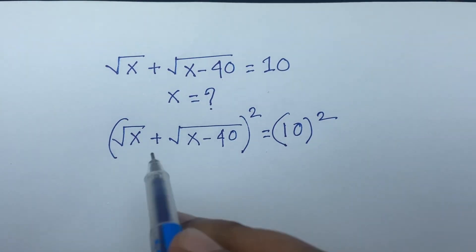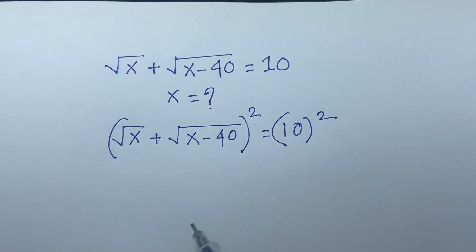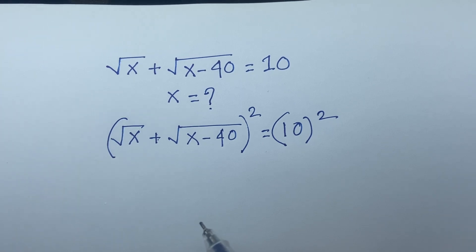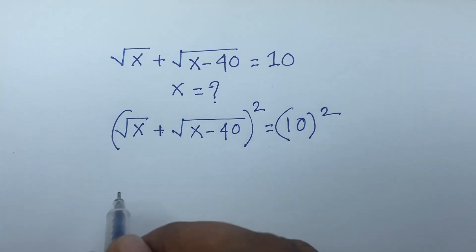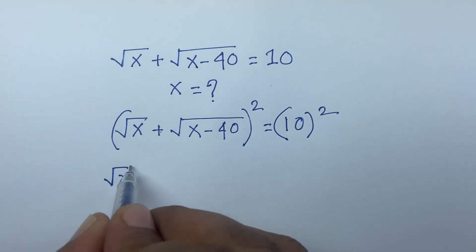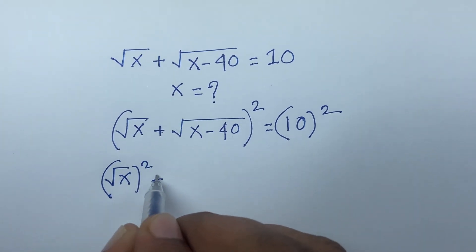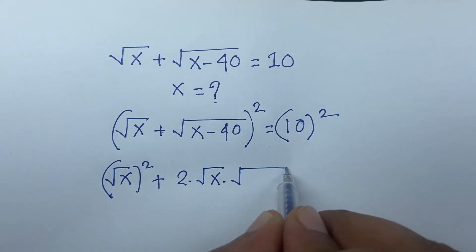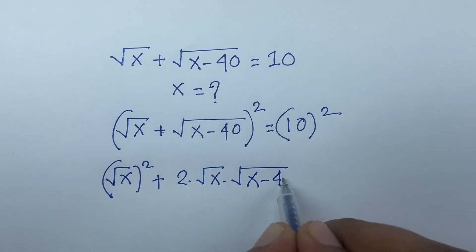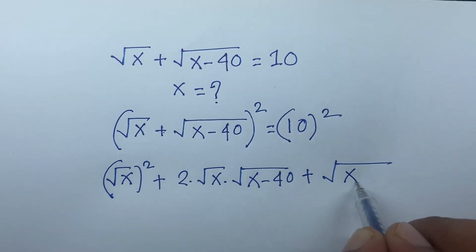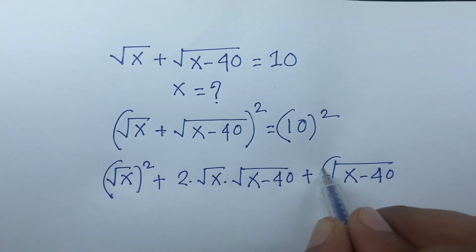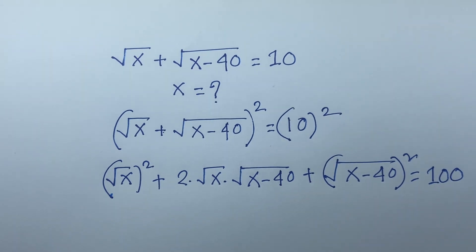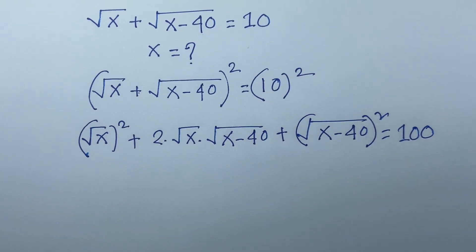We know that a plus b whole square equals a squared plus 2ab plus b squared. According to this formula, we get square root x whole square plus 2 times square root x times square root x minus 40 plus square root x minus 40 whole square is equal to 100.